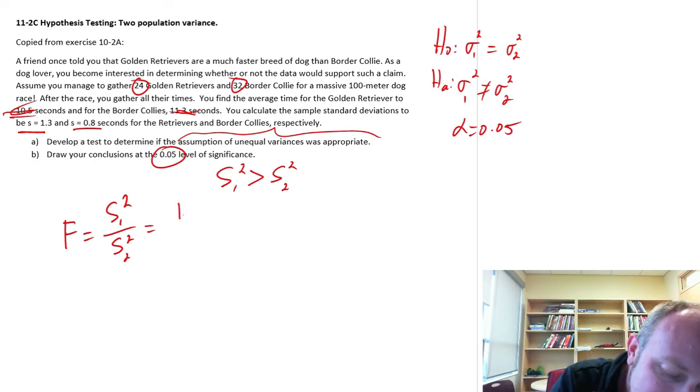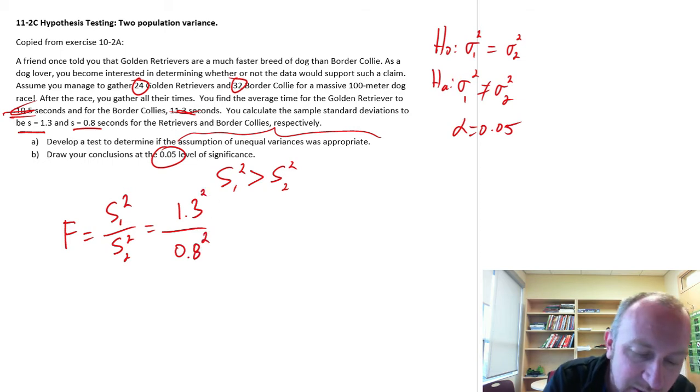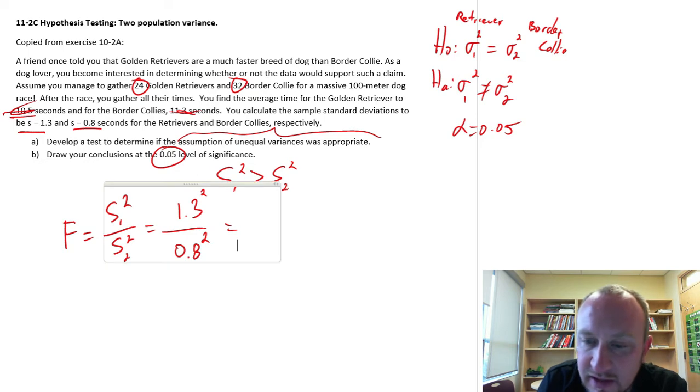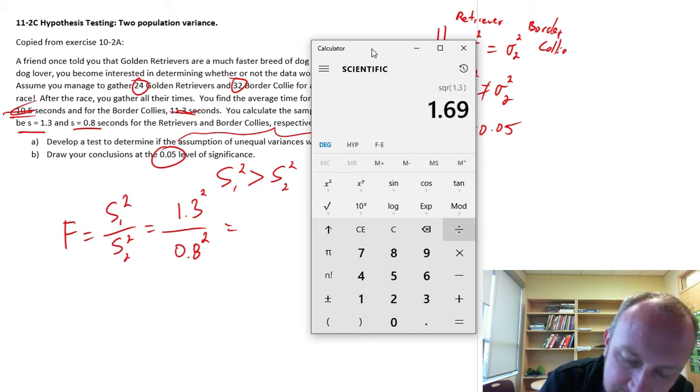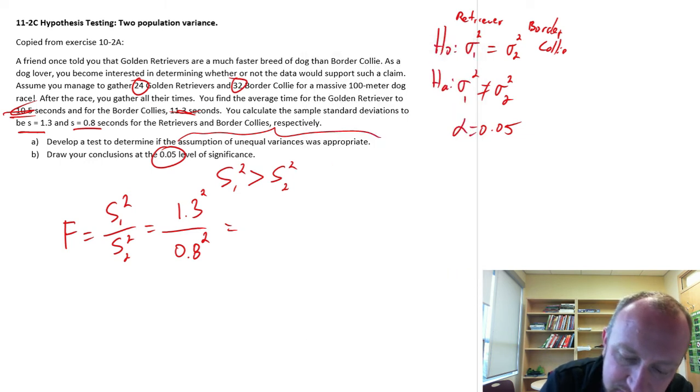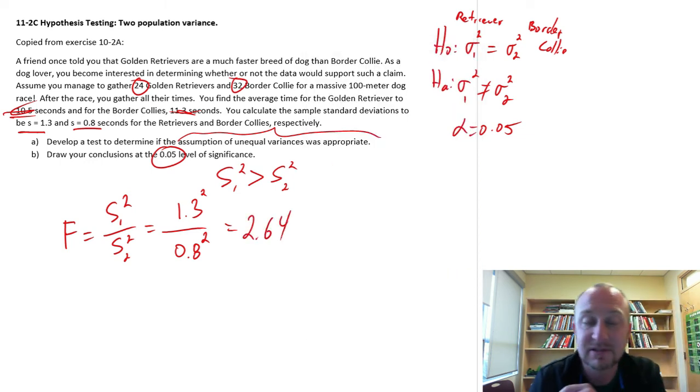So this is going to be 1.3 divided by 0.8, both of those squared. And so I've therefore defined population 1 as the Golden Retrievers and population 2 as the Border Collies. Now we can calculate the value of our test statistic. 1.3 squared divided by 0.8 squared, 2.64. So there's our test statistic.